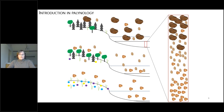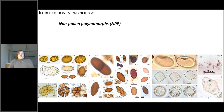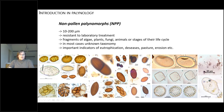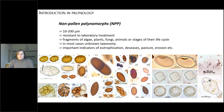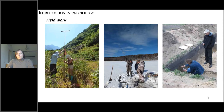In these archives, not only pollen are preserved but also non-pollen palynomorphs — objects between 10 to 20 micrometers, the size range of pollen grains, resistant to laboratory treatment. They represent fragments of algae, plants, fungi, animals, or stages of their life cycle. In cases where we can identify them, they are important indicators for eutrophication, diseases, pasture, and erosion.